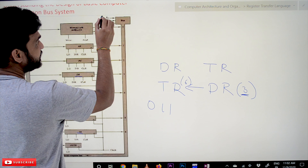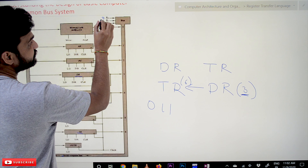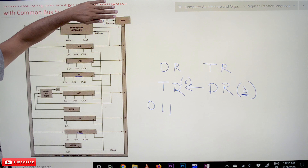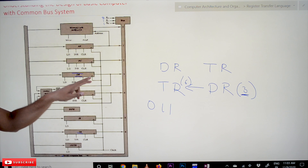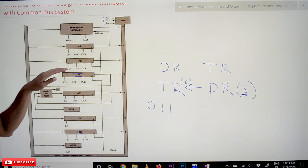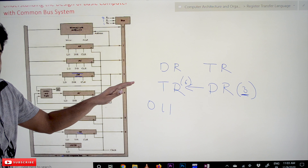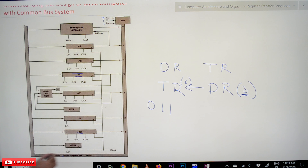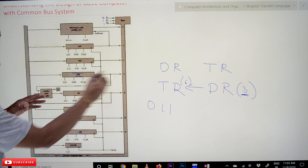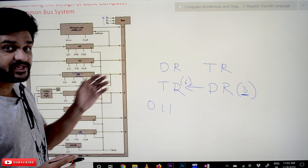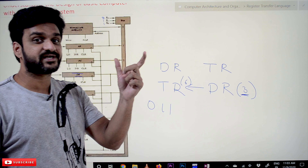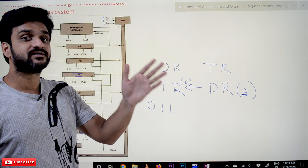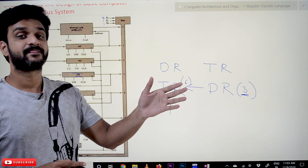DR is a 16-bit register. Once the content of DR is on the common bus, it is available at the input of every register. However, the data will not be loaded into a register automatically. It will only be loaded when the load input of that particular register is activated. Each register has independent control inputs: load, INR (increment), and clear.